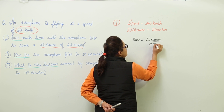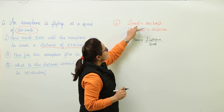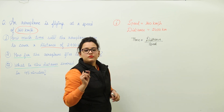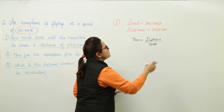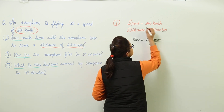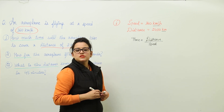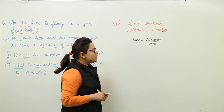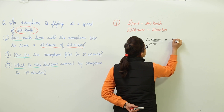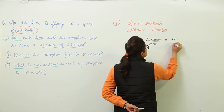We have both the data values. We have the speed and we have the distance. Now we check their units — the distance is in kilometers and the speed is also in kilometers per hour. The units are appropriate, so we can substitute directly. We get 2400 divided by 360.